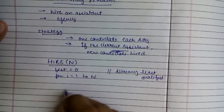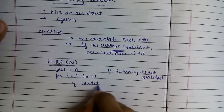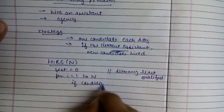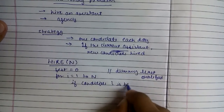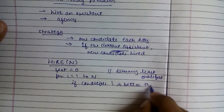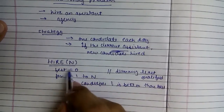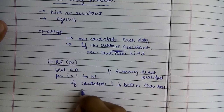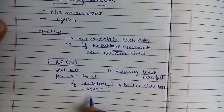So for each candidate I, if candidate I is better than best, then I make best equal to I — I hire that candidate.